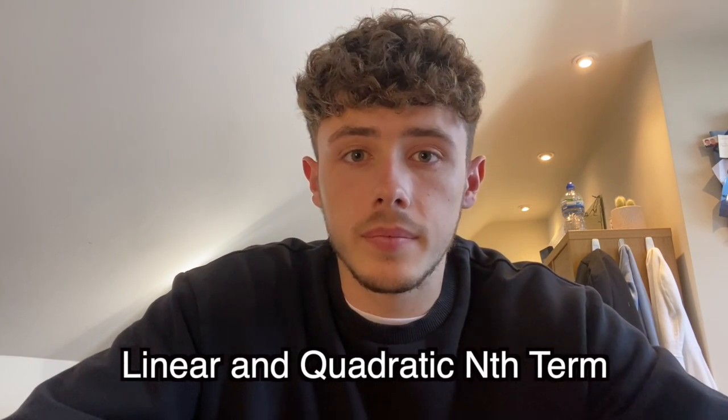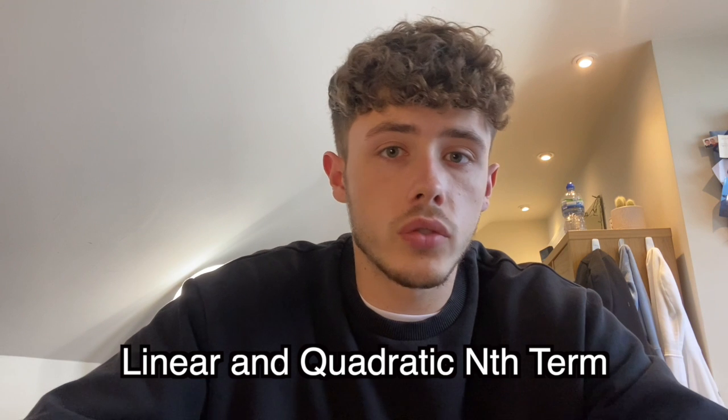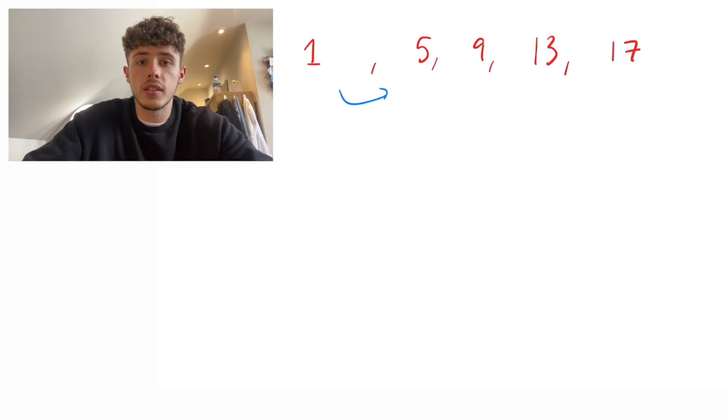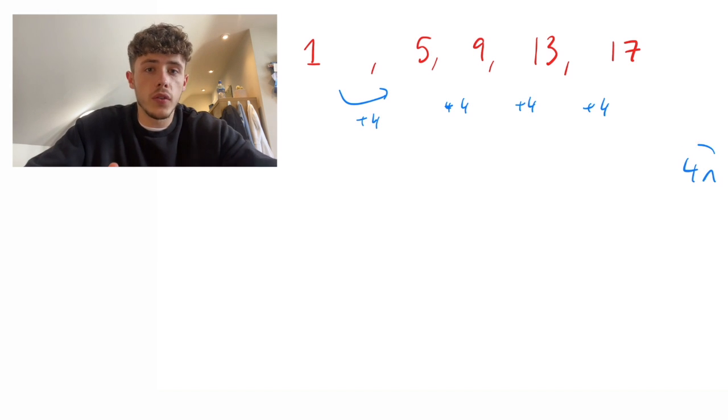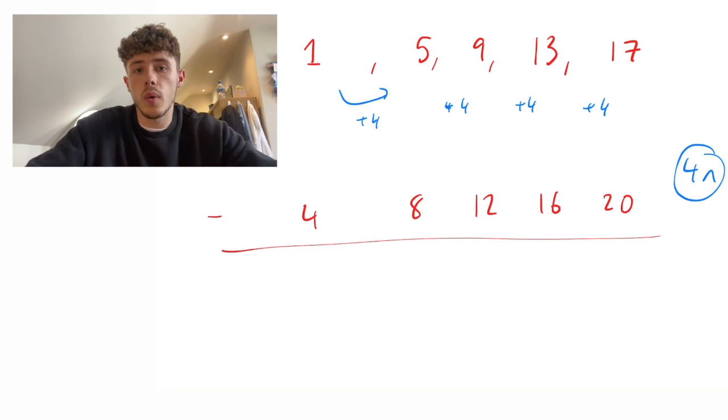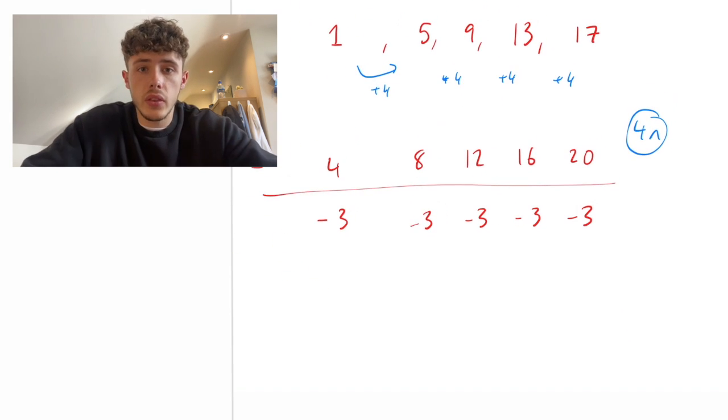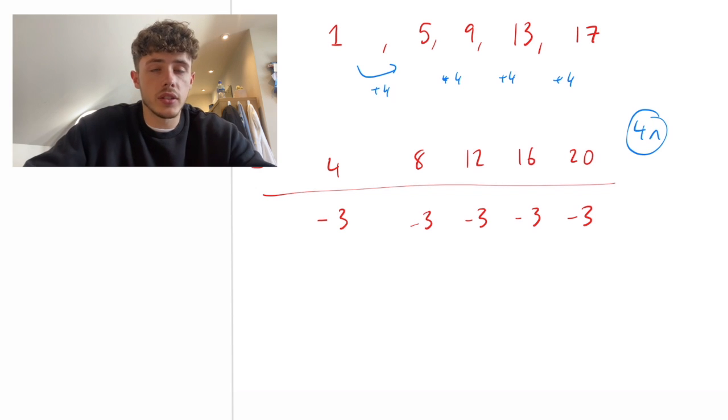Another example is with nth term. This could be linear nth term or quadratic nth term. Let's say we have the sequence of 1, 5, 9, 13 and 17. We would find our first difference, which is adding 4 each time. So we know our nth term is going to be 4n. You would write the 4 times table underneath and take it away from your original sequence, and you will find you get minus 3 at the bottom. This means our nth term is 4n minus 3.